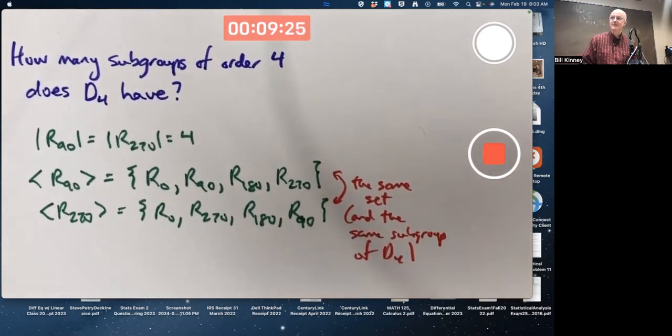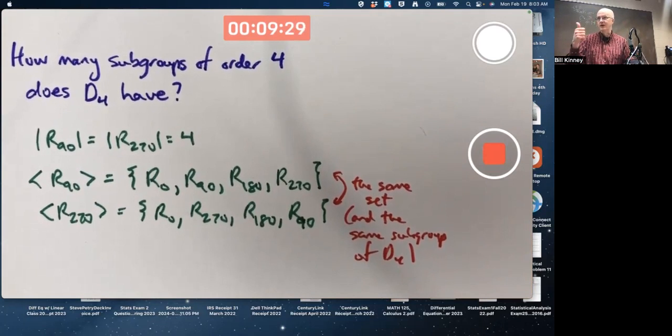Are there more? Key things you want to think about are, for sure, they've got to include R0. For sure, they have to have four elements. And for sure, they have to be closed under both multiplication and inverses. Associativity will automatically happen because it's true in the group overall.